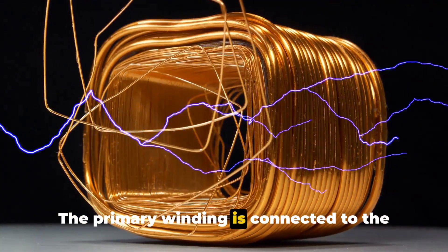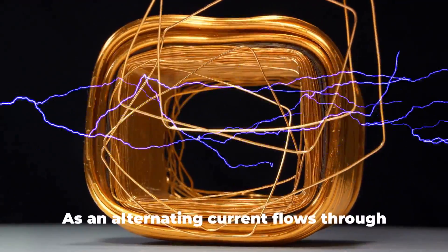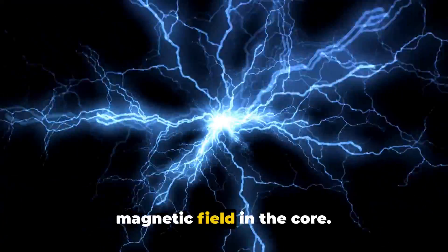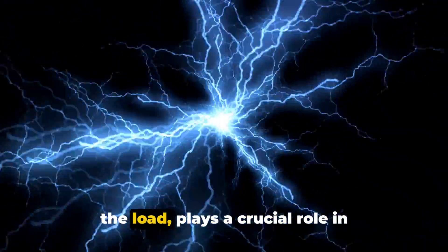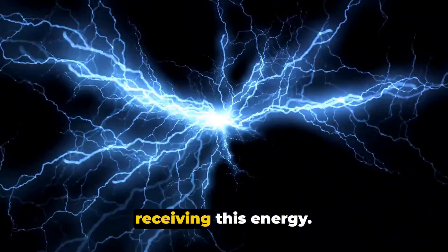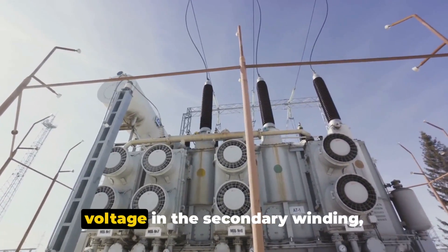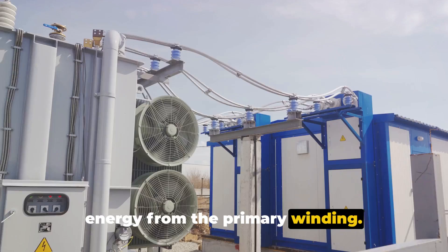The primary winding is connected to the input voltage source, and it's here that the magic begins. As an alternating current flows through this winding, it creates a changing magnetic field in the core. Now, the secondary winding, connected to the load, plays a crucial role in receiving this energy. The changing magnetic field induces a voltage in the secondary winding, effectively transferring the electrical energy from the primary winding.